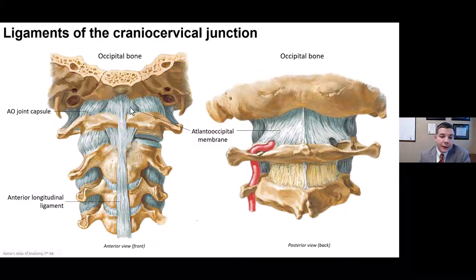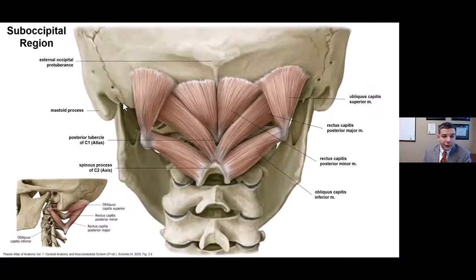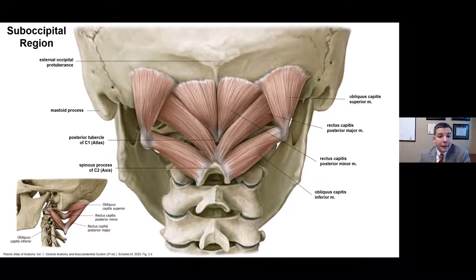Anteriorly, there are the joint capsules, the atlantooccipital membrane, and the anterior longitudinal ligament to complement the posterior longitudinal ligament. All of these ligaments are very salient in keeping the cranial cervical junction stable.